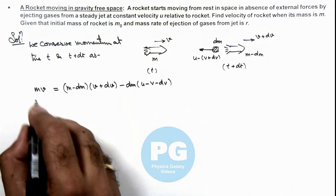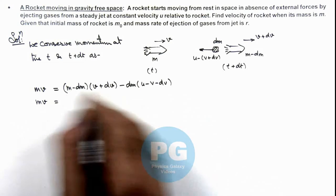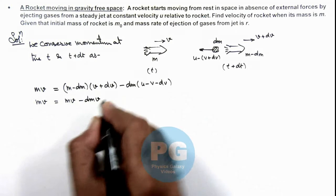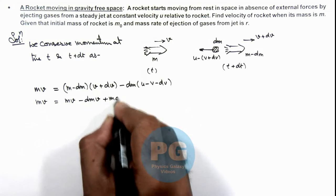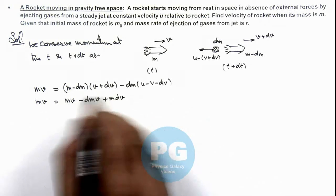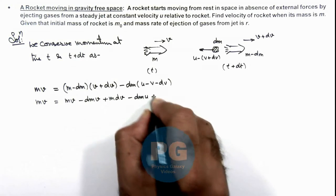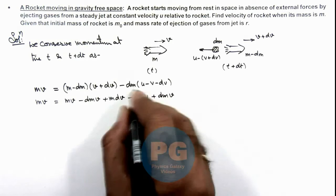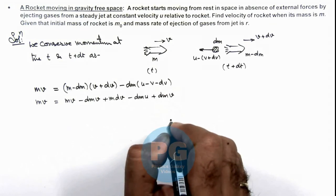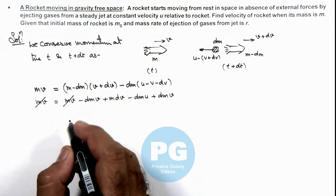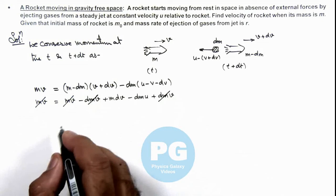If we open this equation, mv equals mv minus dmv plus mdv, we can neglect dmdv the product of elemental quantities, minus dmu plus dmv, again we can neglect the product of elemental quantities. Here this mv gets cancelled out and this dmv also gets cancelled out.